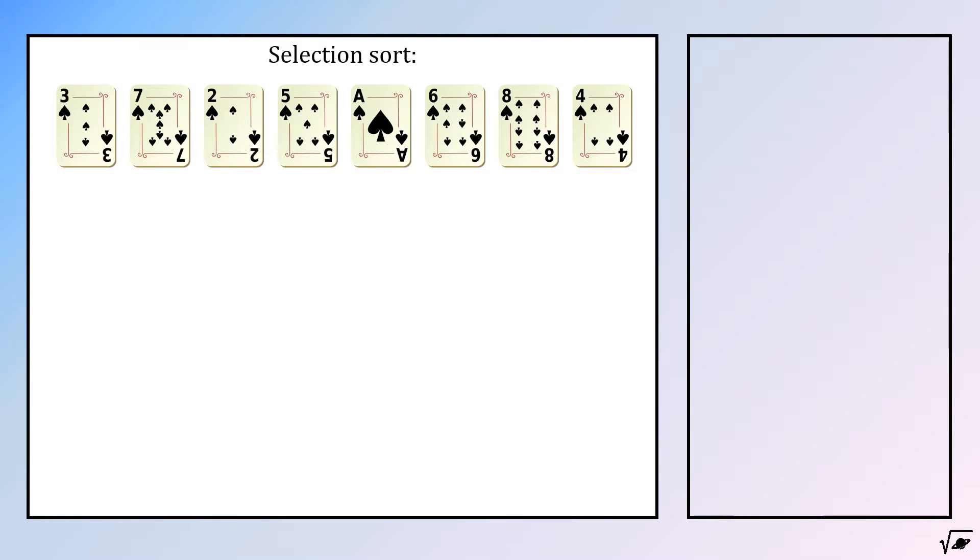In this algorithm the computer searches for the smallest number and will put that one in front. In computer language this means we need to put the first number, the 3, into memory. So we can take the second card, number 7, and compare it with the one in memory. If the evaluated card is larger, nothing will happen.